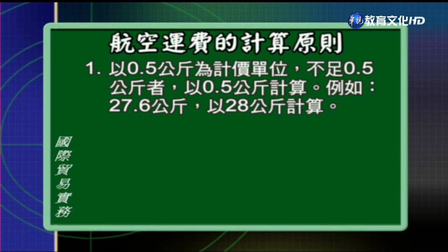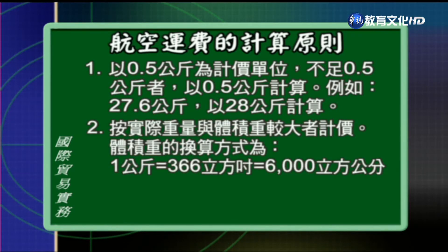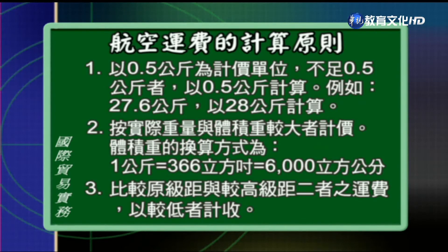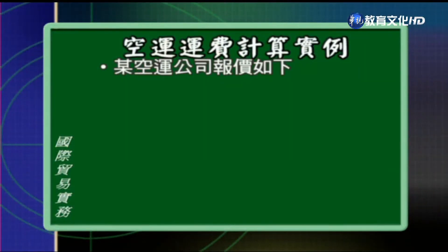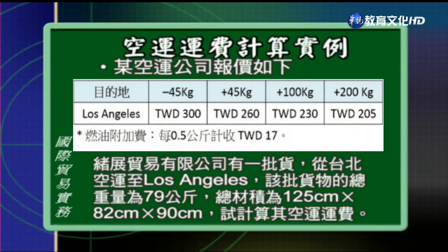航空运费在计算的时候以0.5公斤为计价单位，不足0.5公斤就以0.5公斤计算。它会依照实际的重量跟体积重两个比较大的来计价，体积重的换算方式是1公斤等于366立方寸等于6,000立方公分。然后比较原级距跟较高级距两个的运费，采取较低的。例如某空运公司报价：低于45公斤每公斤收台币300元，高于45公斤不到100公斤的收260元，高于100公斤不到200公斤的收230元，超过200公斤的收205元，另外加收燃油附加费。